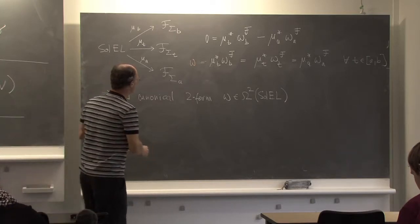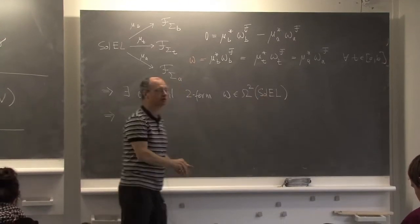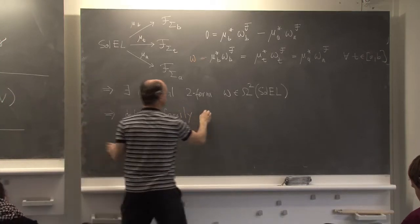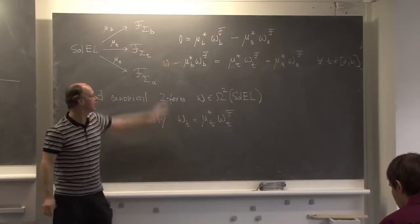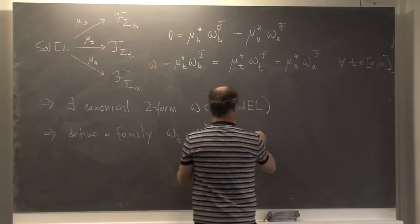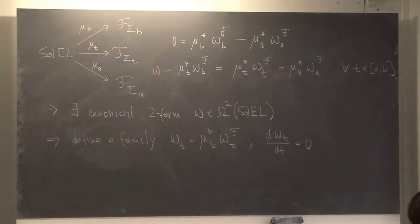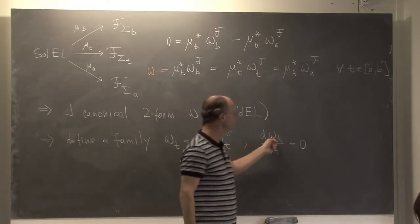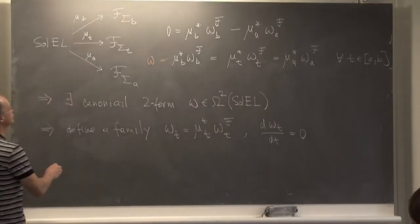One can also phrase this as: there is a family of two-forms omega_t on Sol(EL), all defined by pulling back, and the equation says they all coincide — d(omega_t)/dt = 0. In quantum mechanics, omega_t is sometimes called a canonical invariant.